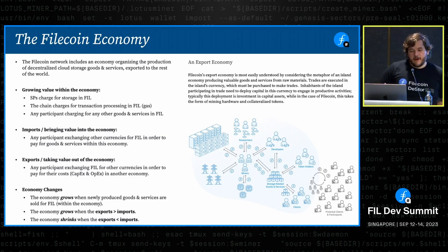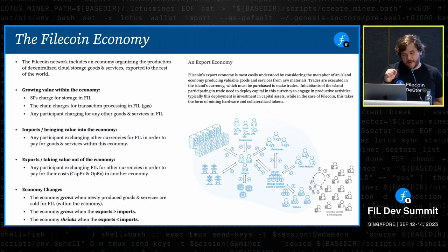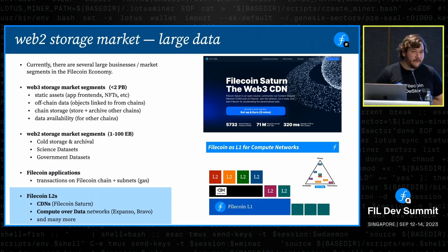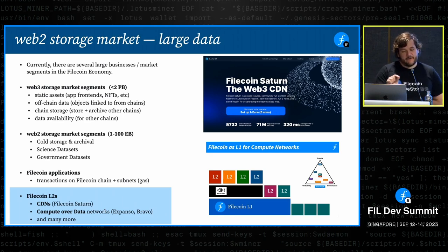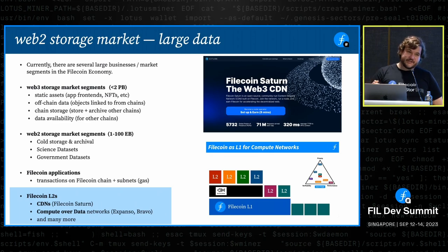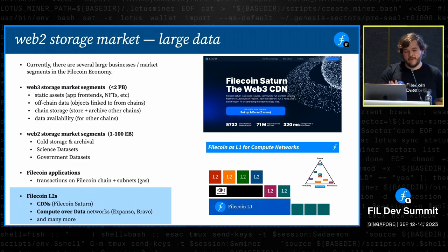Coming back to the Filecoin economy: if you want to grow the value of the economy, you either transact more in direct Filecoin or you figure out other components — other businesses — to tap into. That means either build an L2, build more Filecoin applications, scale the data onboarding in the Web2 storage market, or figure out these Web3 storage market components and upsell. The cost reduction piece is tricky because if we have to give a cost reduction to bring in value, the margin is just not very large. So we have to bridge this with the whole menu of options.